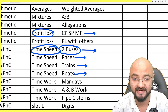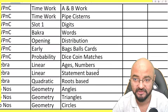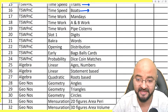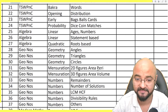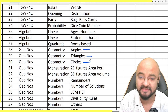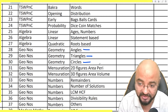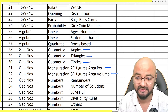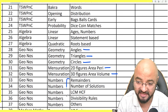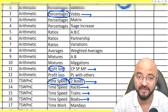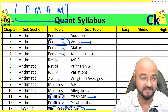I'm breaking every topic down into parts. For geometry: angles, triangles, circles, mensuration, 2D figures, 3D figures. For numbers, there are five types of questions. If you can break each topic down into types of questions, you can score well in the exam.